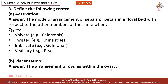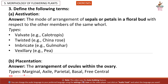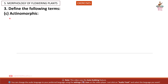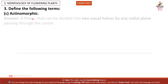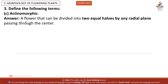(b) Placentation: the arrangement of ovules within the ovary. Types: Marginal, Axile, Parietal, Basal, Free central. (c) Actinomorphic: a flower that can be divided into two equal halves by any radial plane passing through the centre. Example: mustard, Datura.